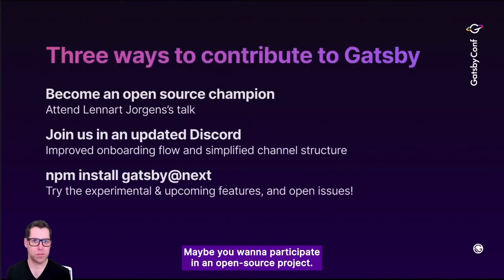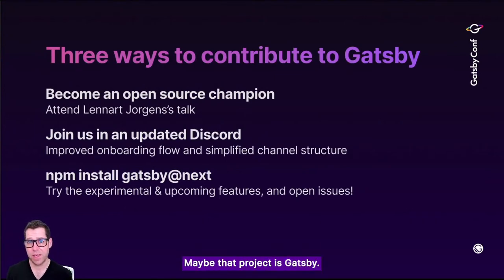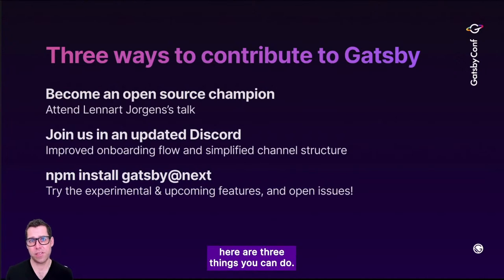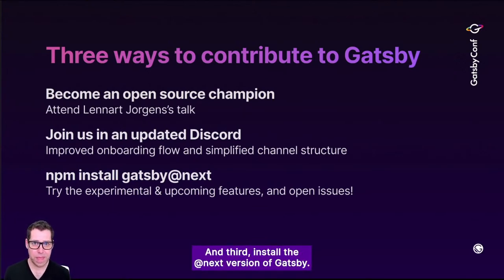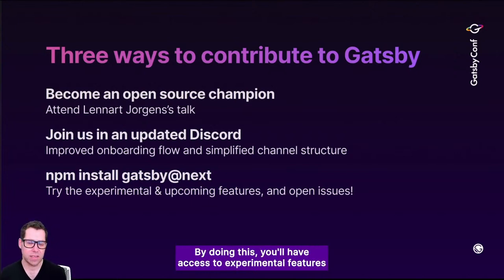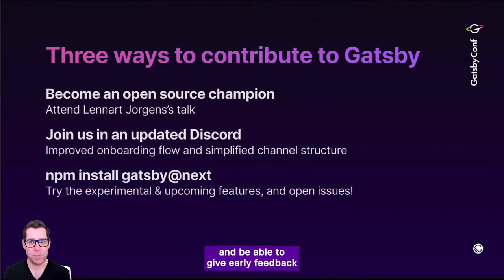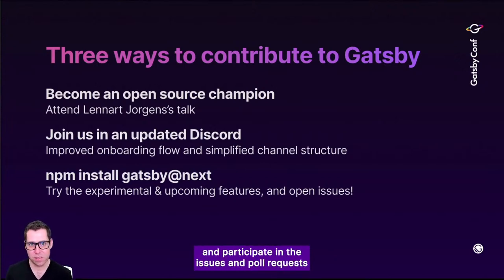Maybe you want to participate in an open source project — maybe that project is Gatsby. If you'd like to get started, here are three things you can do. First, attend Leonard's talk about becoming an open source champion. Secondly, join our Discord server. And third, install the @next version of Gatsby. By doing this, you'll have access to experimental features and be able to give early feedback and participate in the issues and pull requests. That's a great way to get involved in the project.